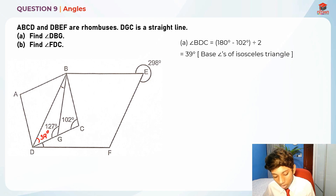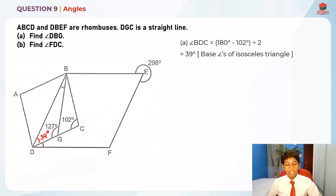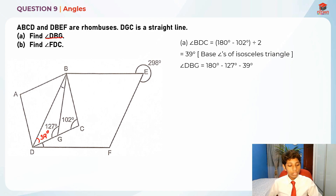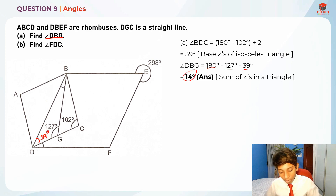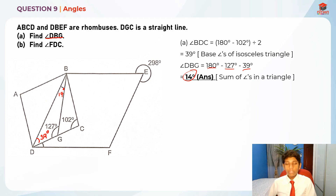Next, we are going to use the sum of angles in a triangle. In order to find angle DBG, we take 180 degrees minus 127 degrees minus 39 degrees, which gives us 14 degrees. So 14 degrees is the answer for angle DBG.